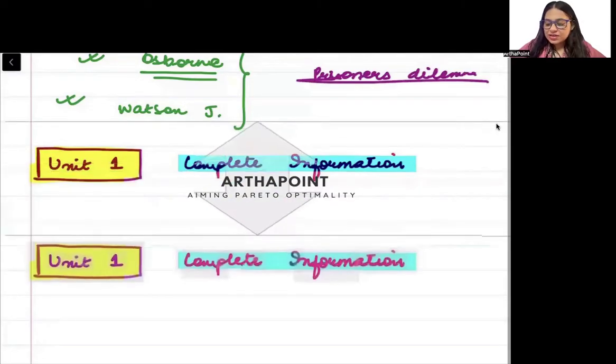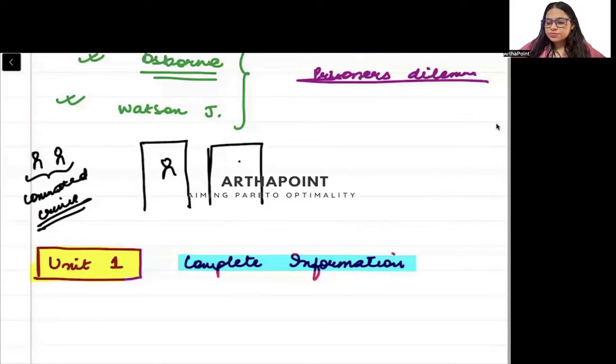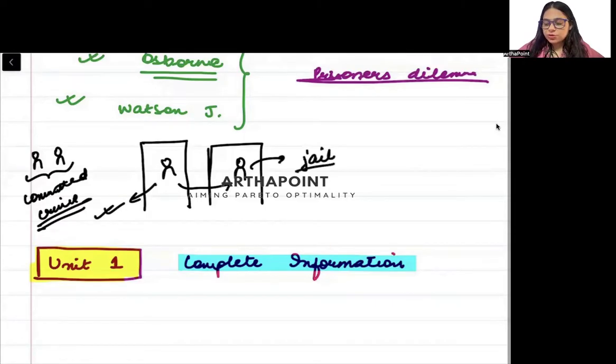So there is something which is known as prisoner's dilemma, which is very common in this course. I give you an example where I tell you that there are two prisoners whom I have caught. They have committed a crime. And I put these prisoners in different rooms, in two separate rooms.